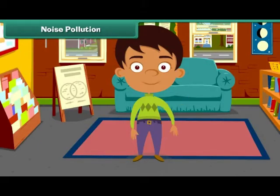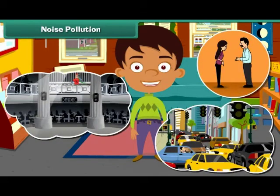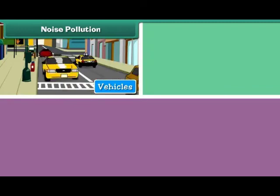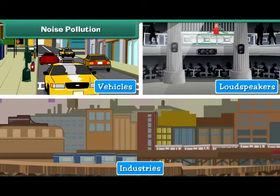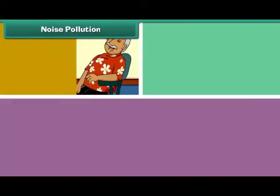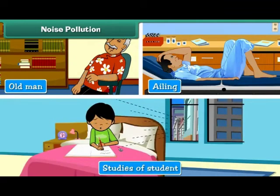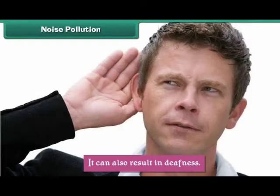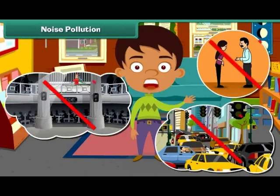Noise Pollution. Unwanted sound that disturbs the environment is called noise pollution. Noise pollution is caused by the movement of vehicles, honking of horns, use of loudspeakers, and running of machines in industries. Noise pollution disturbs the old and the ailing. It interferes with the studies of students. It can also result in deafness. We can prevent noise pollution by reducing unwanted sounds.